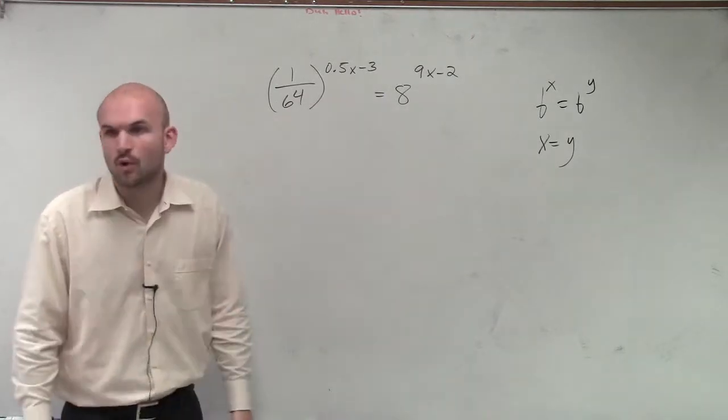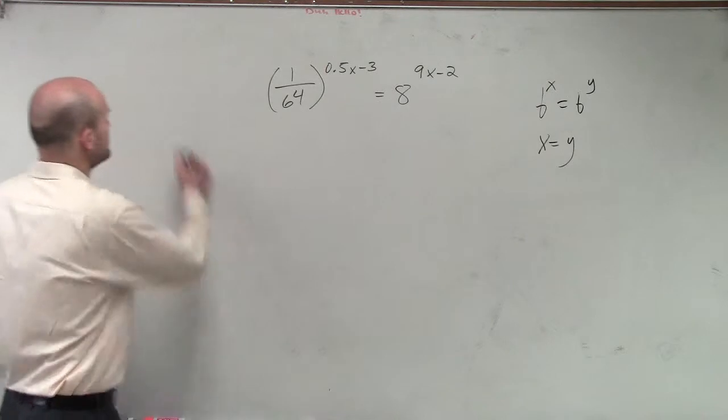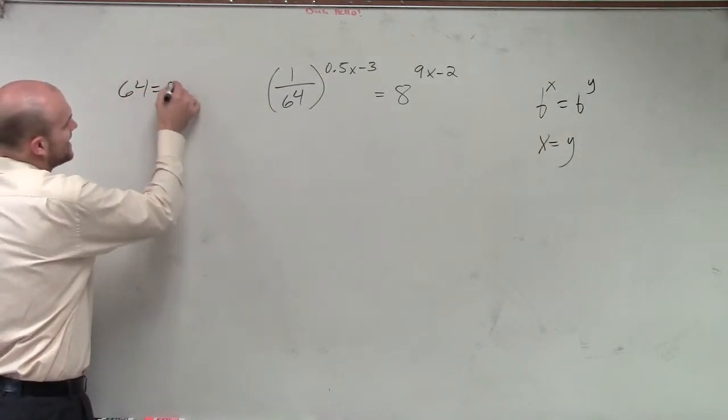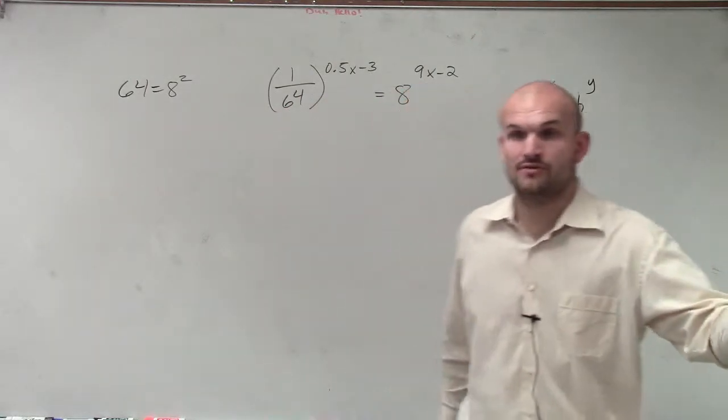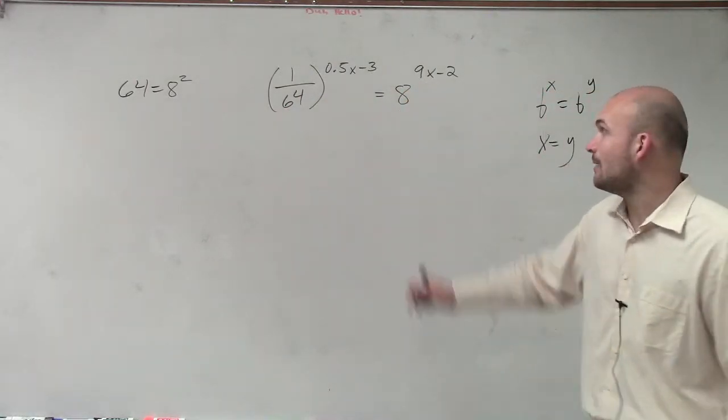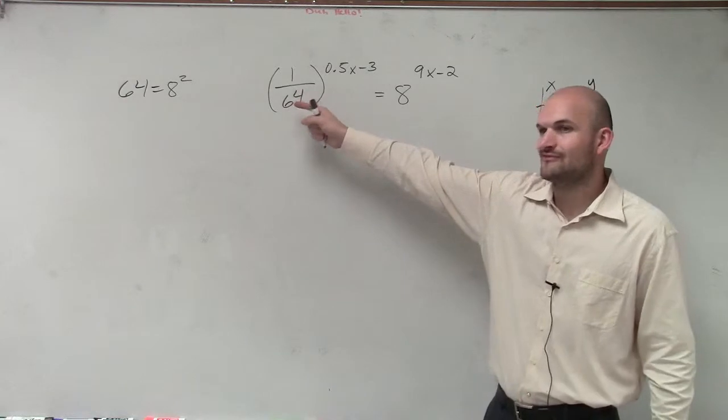How can I transform 1 over 64? Well, first of all, we know that 64 equals 8 squared. So if this was a regular 64, I could just rewrite that as 8 squared, then they'd have the same base of 8. But the problem is now, I have this as a fraction.